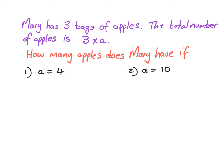Here's a worked example: Mary has three bags of apples. The total number of apples is given by the expression three times a. How many apples does Mary have if a equals four, and secondly if a equals ten? We substitute the value of a into the expression. Put the video on pause and give it a go.